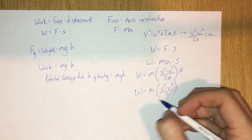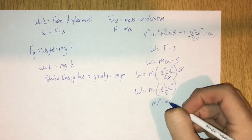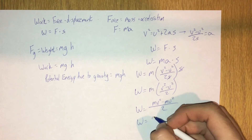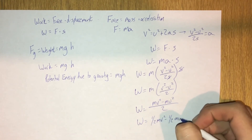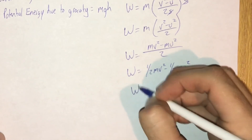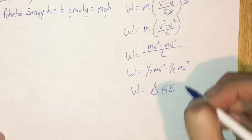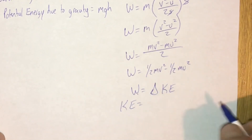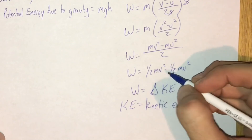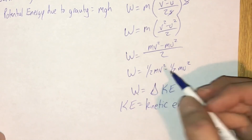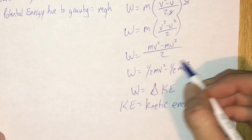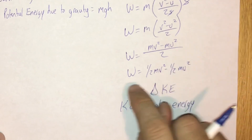If we distribute m here, we'd have mv squared minus mu squared over 2. Then we can break that apart and write it as one-half mv squared minus one-half mu squared. And one-half mv squared is the kinetic energy of an object. So we see that the work done to an object is equal to the change in the kinetic energy of the object. Kinetic energy is the energy of motion, so an object that has mass m and speed v has kinetic energy one-half mv squared. If an object starts at an initial speed of zero, this term would be zero and we can just think of that as the equation for kinetic energy.